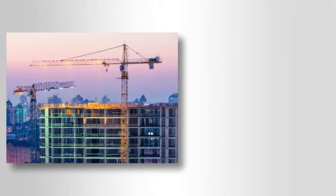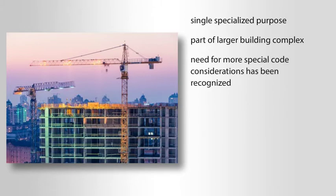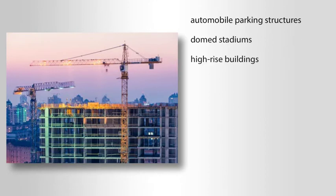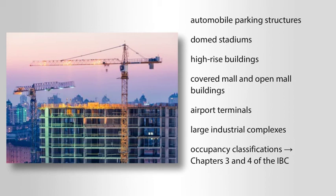As more and more buildings are being designed either for a single specialized purpose or as part of a larger building complex, the need for more special code considerations has been recognized. Some examples of these special uses include automobile parking structures, domed stadiums, high-rise buildings, covered mall and open mall buildings, airport terminals, and large industrial complexes such as steel mills and assembly plants. For additional information or details of the various occupancy classifications, refer to Chapters 3 and 4 of the International Building Code.